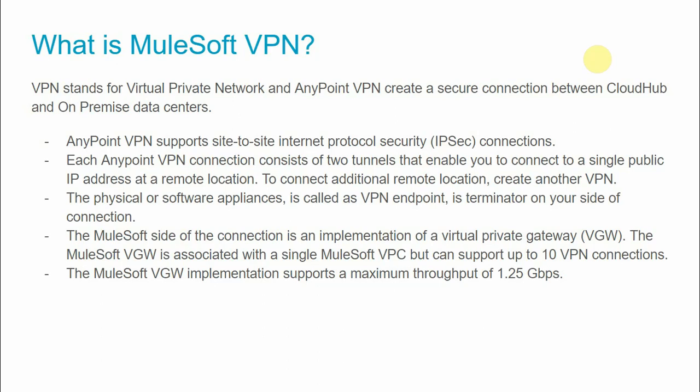Anypoint VPN supports site-to-site IPSec tunneling connections. Each Anypoint VPN consists of two tunnels that enable you to connect to a single IP address at a remote location. To connect to additional remote locations, you create another VPN.